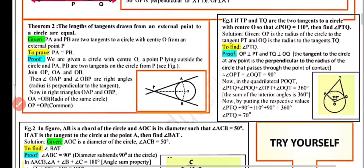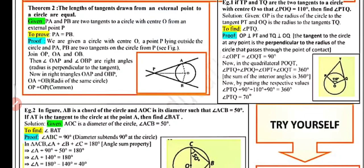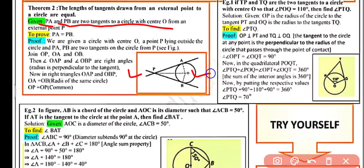Theorem number two: the lengths of tangents drawn from an external point to a circle are equal in measure. We need to prove that PA equals PB, where PA and PB are two tangents to a circle with center O from an external point P.